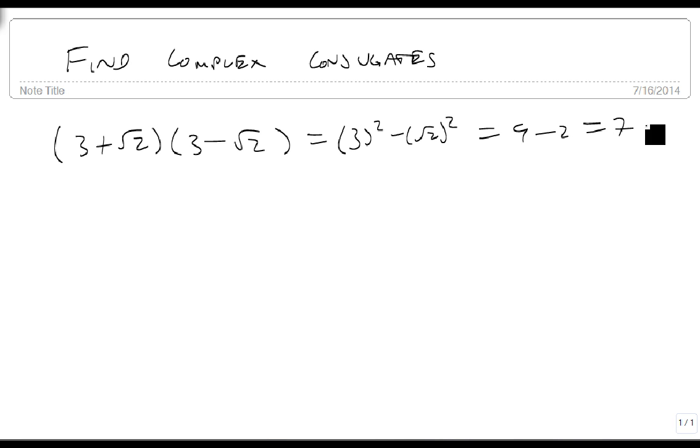It's going to work the same way, but there's a very subtle difference. Notice what happens if I take 6 plus 2i times 6 minus 2i. This gives me 6 squared minus 2i squared, which is 36 minus 4i squared.